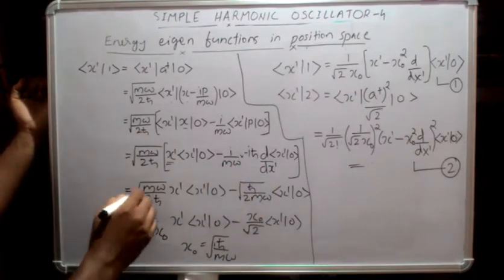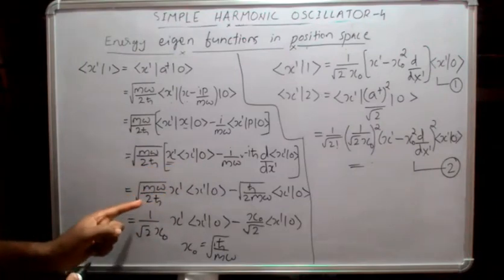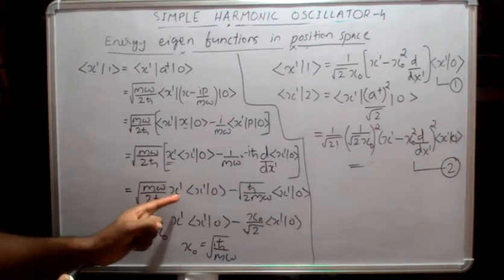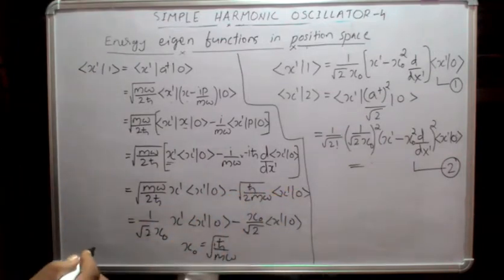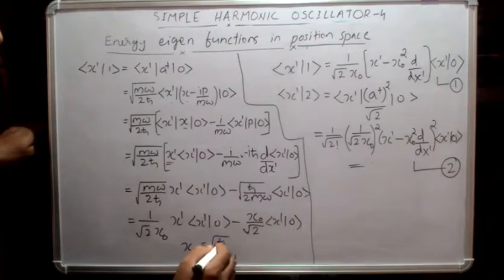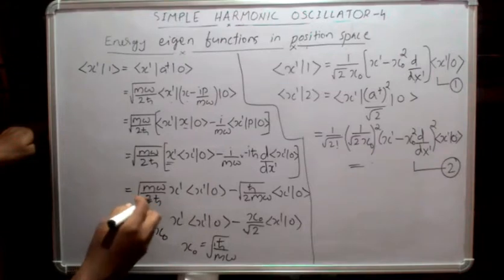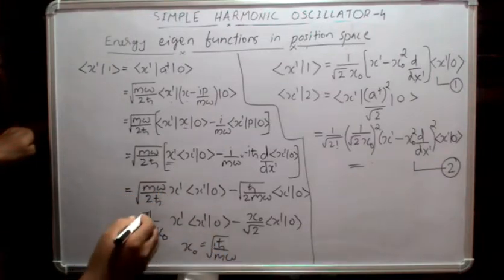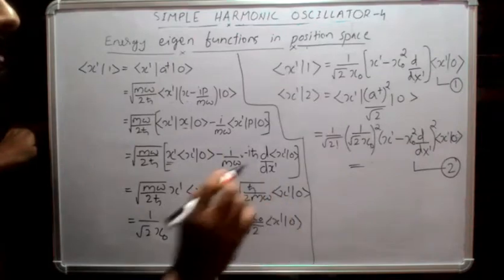Expanding this, we get under root m·ω over 2ℏ times x'⟨x'|0⟩ minus under root ℏ over 2m·ω times ⟨x'|0⟩. We define x₀ = under root ℏ over m·ω, and substituting gives 1 over under root 2 x₀ times x'⟨x'|0⟩ minus x₀ over under root 2 times ⟨x'|0⟩.